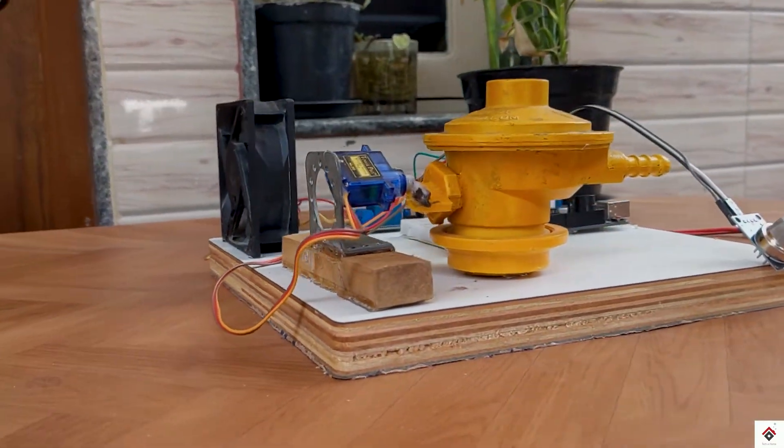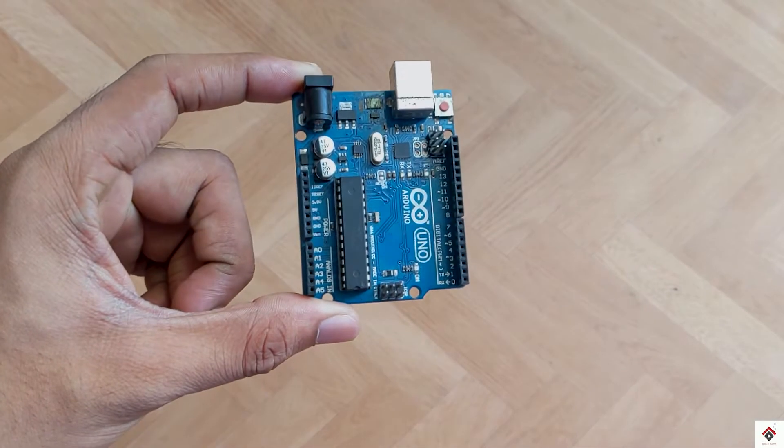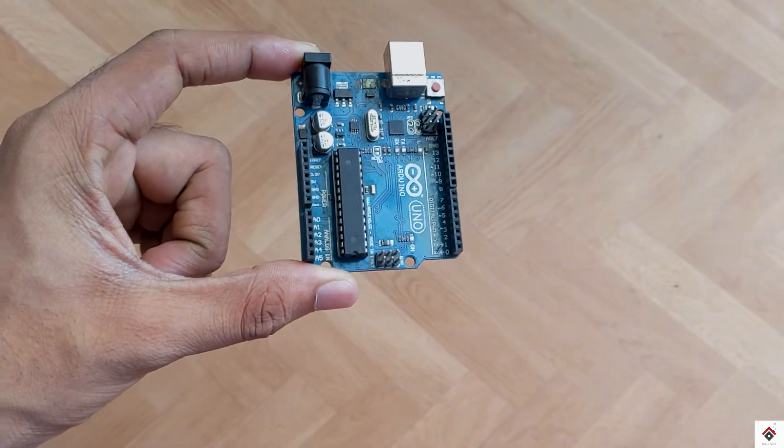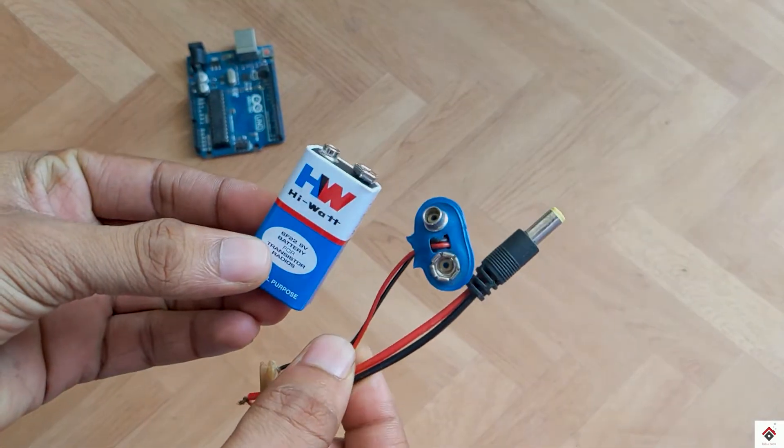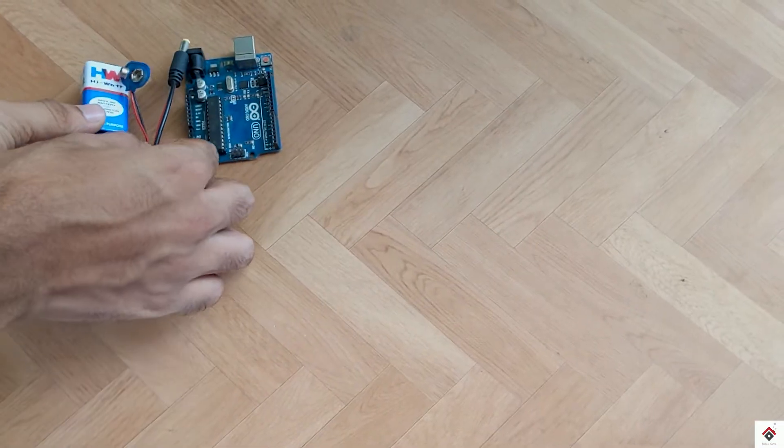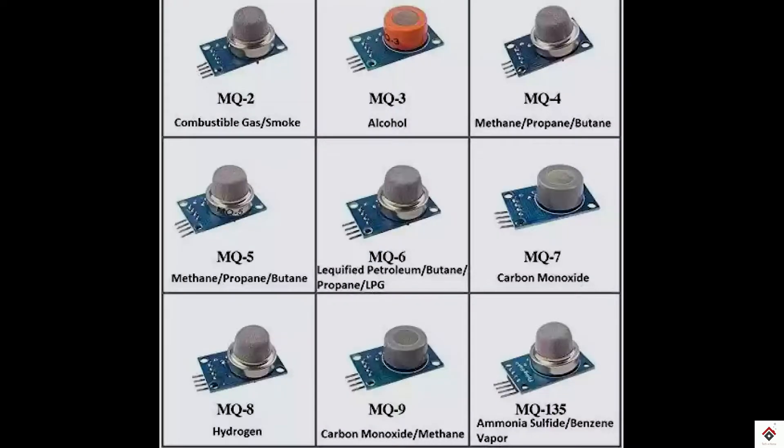We'll see the components required for this project. You need an Arduino board. To power up the board, either you can use the Arduino USB cable or a 9-volt battery with this round pin connector. Next, we need MQ gas sensor. There are a lot of sensors based on your requirement. You can select the appropriate one. Here I'm using MQ4 sensor which can detect methane, propane, or butane.